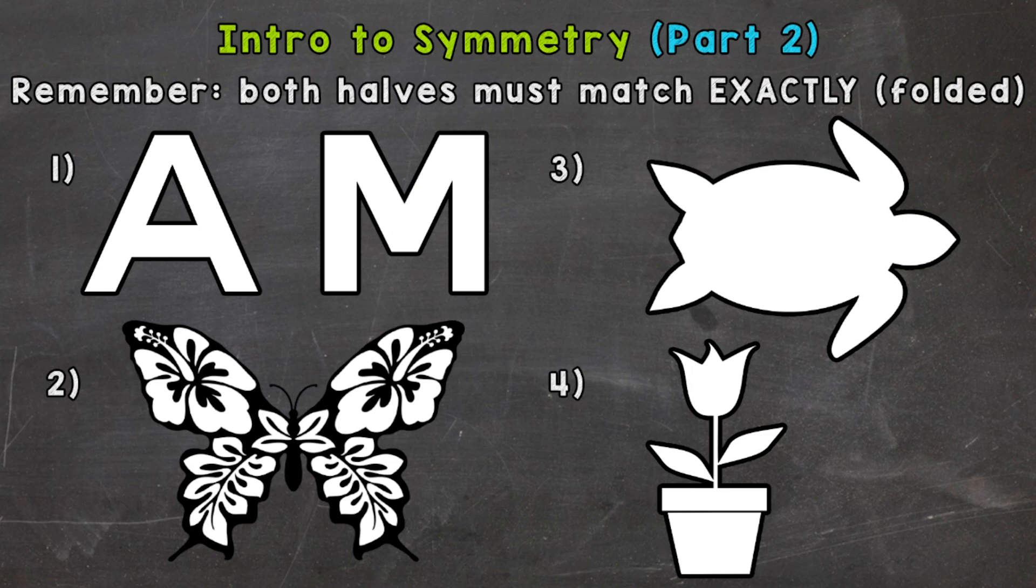So let's take a look at number one, where we have an A and an M. We are taking a look at those letters separately, not as one word. So let's look at the A first. And an A does have a line of symmetry going vertical. I'll try to draw my lines as straight as possible.